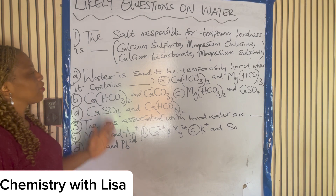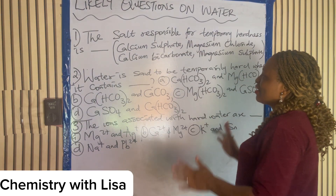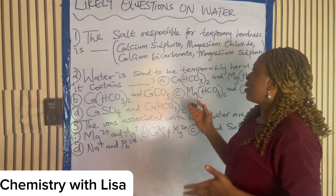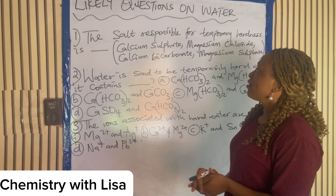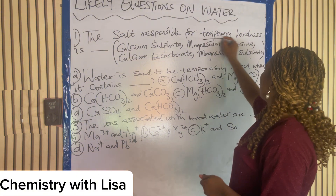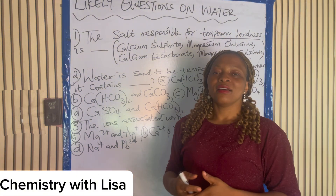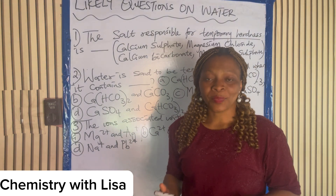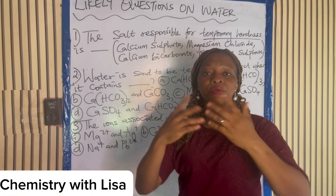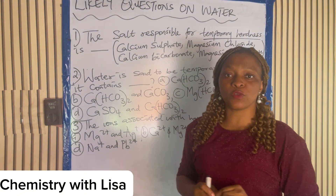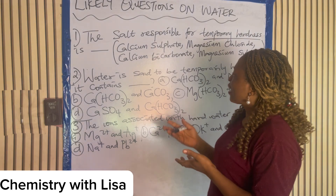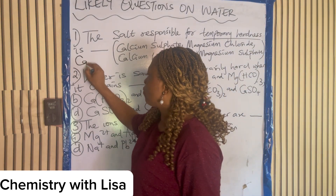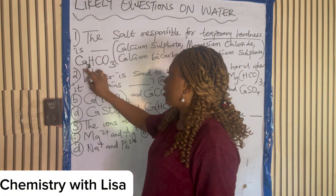The salt responsible for temporal hardness is: calcium sulfate, calcium chloride, calcium bicarbonate, or calcium sulfate? Which salt is responsible for temporal hardness? Temporal hardness is a hardness that can be removed by boiling. The one you can remove by boiling is calcium hydrogen carbonate — Ca(HCO₃)₂.